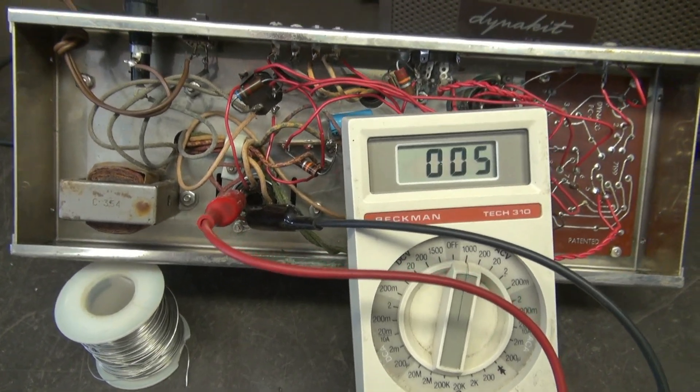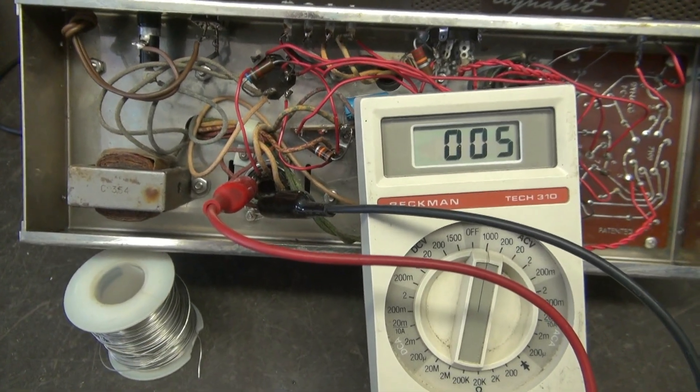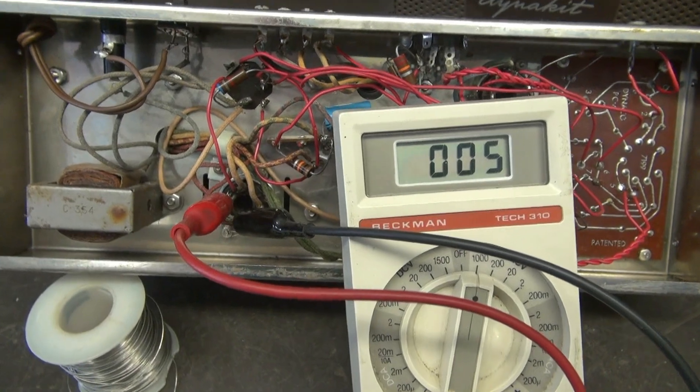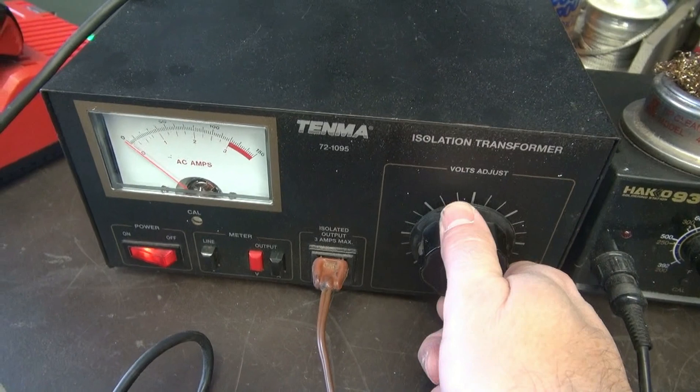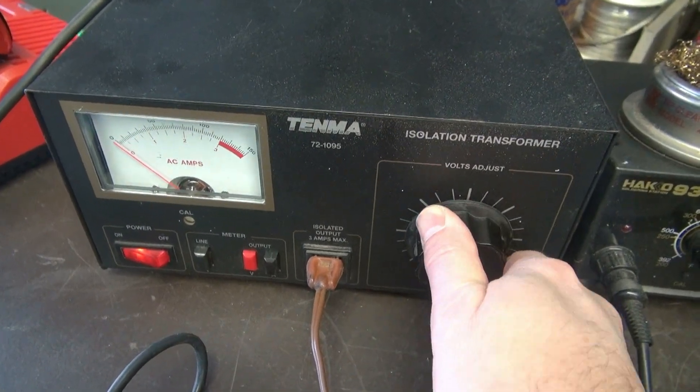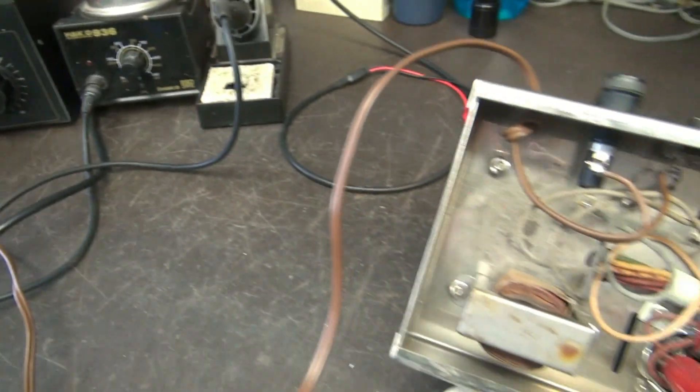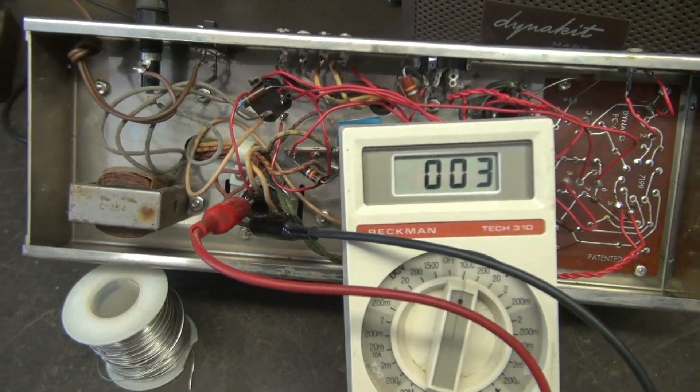So the first thing I do with amps that are in unknown condition is remove all the tubes and bring it up on a Variac. Variac is a very valuable piece of equipment to have in your lab. It will save you a lot of smoke and fire.